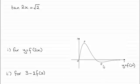The x-coordinates of p and q were shown to be given by this equation, tan 2x equals root 2. Now for this question, we've got to give the x-coordinates of the minimum point for y equals f of 2x and also for 3 minus 2f of x.